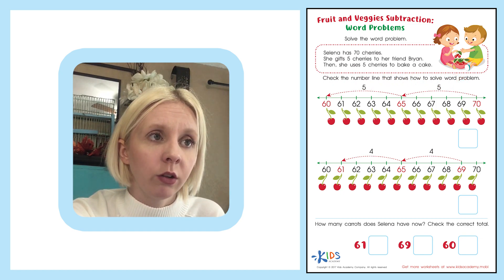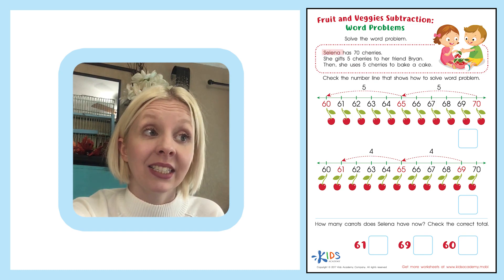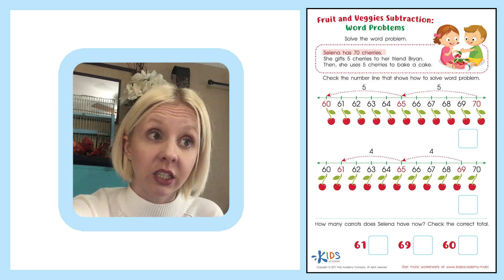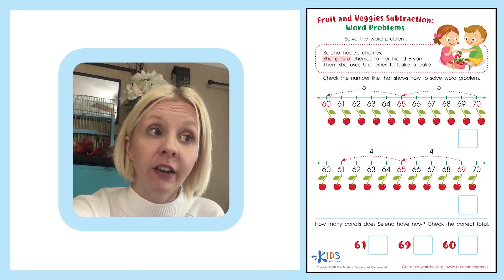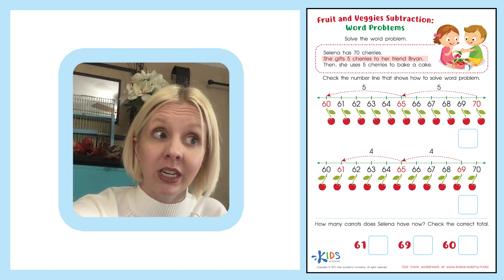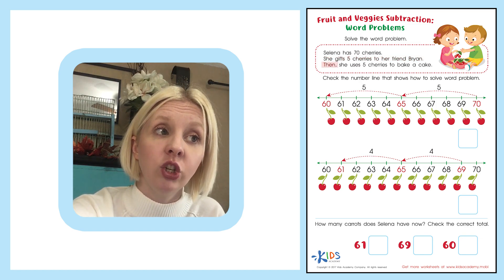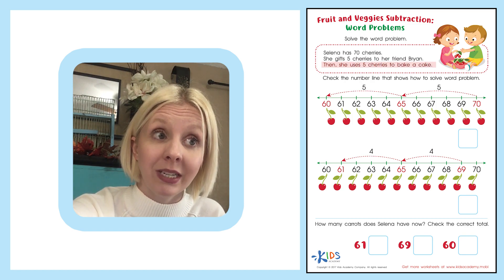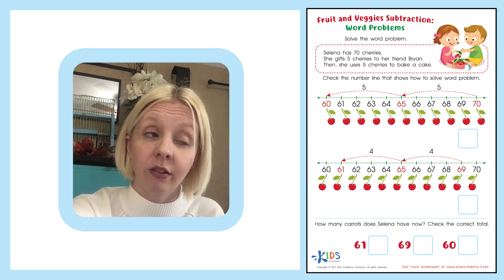Here's the little story, and we've got a little picture of our story here. It looks like Selena has 70 cherries — she's got 70 cherries in her bowl. She gifts 5 cherries to her friend Brian, so when somebody gifts something or gives it away, that means we need to subtract 5 from her 70. Then she uses 5 cherries to bake a cake, so that would be taken away from the 70 as well, meaning we're going to subtract them.